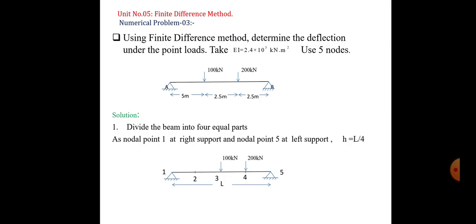A figure is given: there is a simply supported beam at supports A and B, with hinge supports provided. A 100 kN point load acts on the beam 5 m from support A and 5 m from support B. A second point load of 200 kN acts at a distance of 7.5 m from support A and 2.5 m from support B. This problem is to be solved by the finite difference method to find deflection under the point loads using 5 nodes.